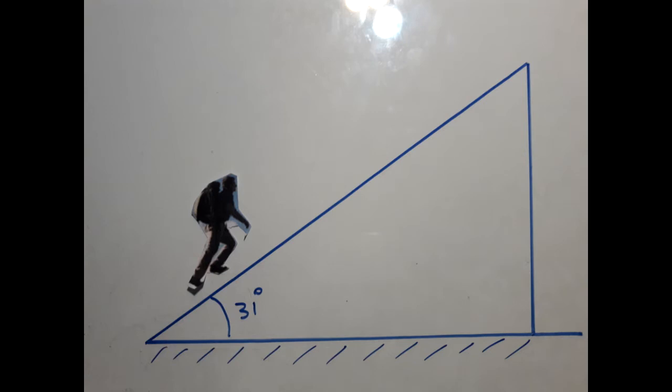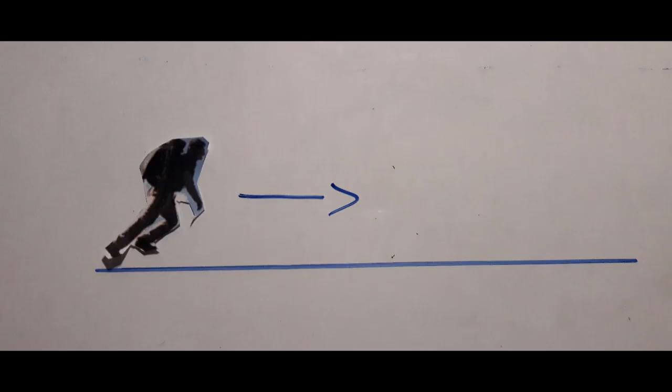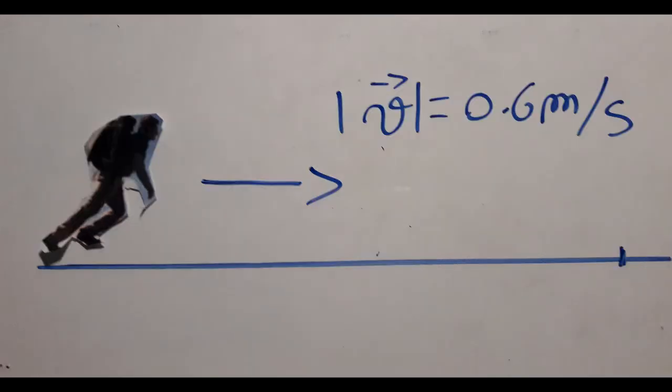From the picture we see that the man is walking parallel to the surface of the slope, so he has a constant velocity in the same direction, parallel with the steep surface. We can imagine him walking in a straight line — the velocity with respect to the steep surface is parallel, with a magnitude of 0.6 meters per second.